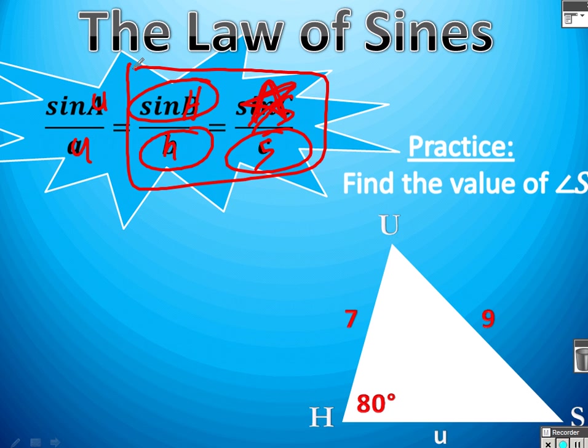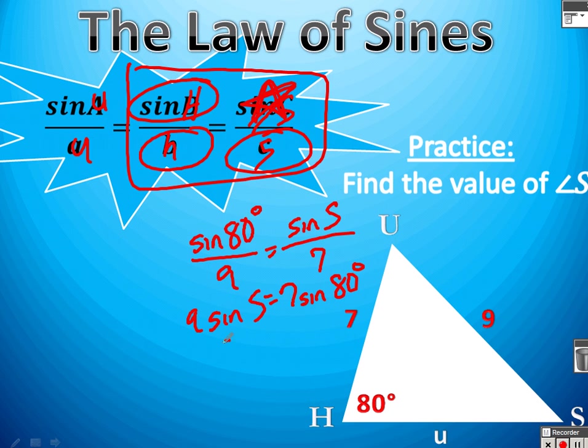Alright, hopefully you did alright with this. When you plugged in, you should have gotten sine of 80 over 9 is going to equal sine of S over 7. You're going to cross multiply, and you should end up getting that sine S times 9 equals 7 times sine 80. Divide both sides by 9, you get sine of S equals 7 sine 80 divided by 9. When you plug that in, you should get sine of S equals 0.76 something. Well, that's because we didn't find angle S. We only found sine of S.